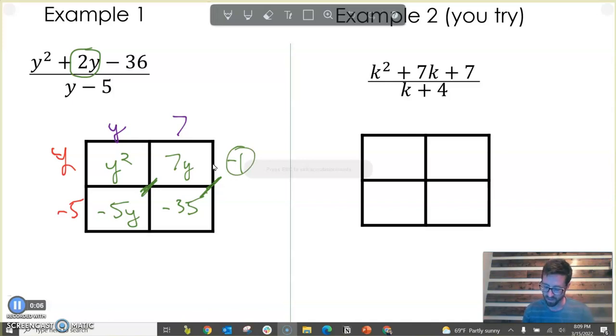That negative 1 is your remainder. So you could say that the quotient here is y plus 7 with a remainder of negative 1. And sometimes you'll see it written like that, but other times you'll see it written as a fraction, negative 1 over y minus 5. That would be your answer.